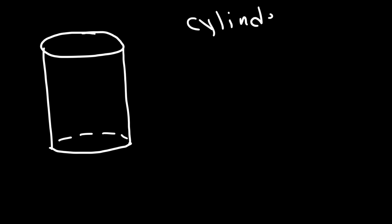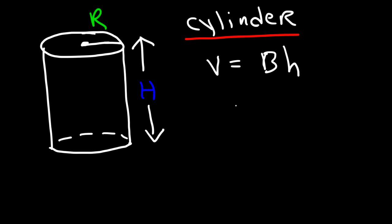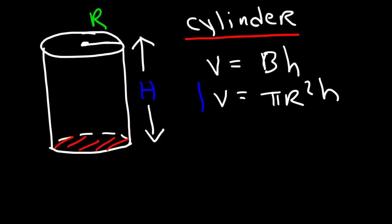The next 3D shape is the cylinder. You need to know the volume and surface area formulas for this shape. R is the radius and H is the height of the cylinder. The volume of a cylinder is the area of the base multiplied by the height. The base has the shape of a circle, and the area of a circle is pi R squared. So the volume of a cylinder is pi R squared times the height.